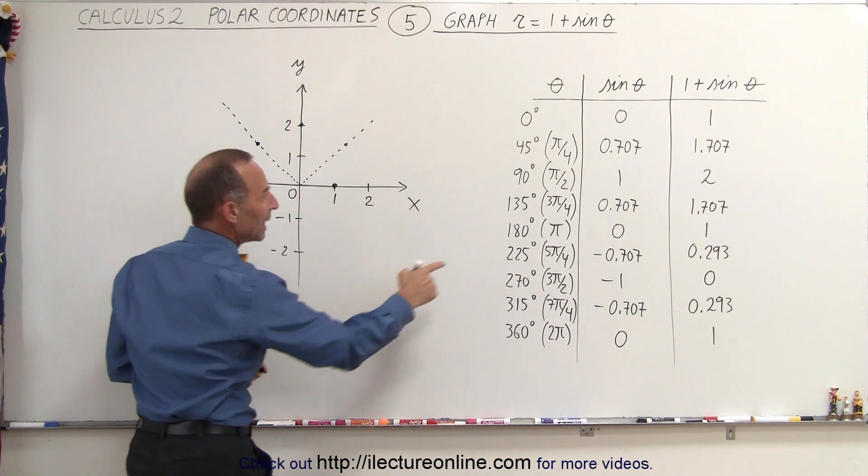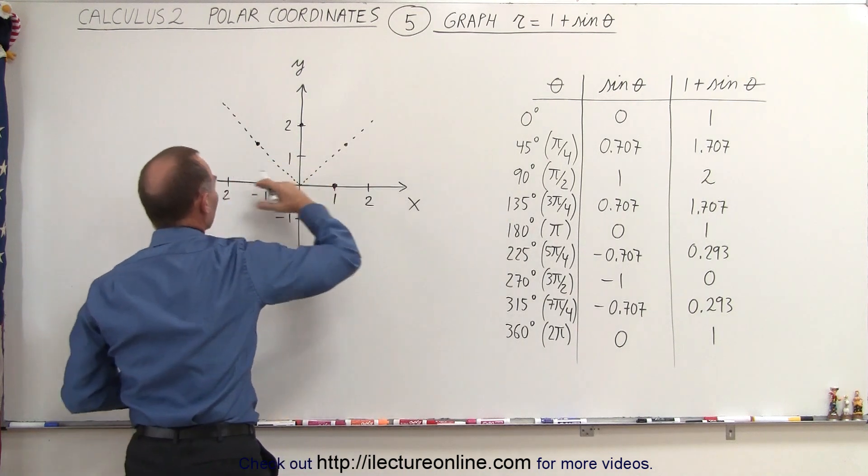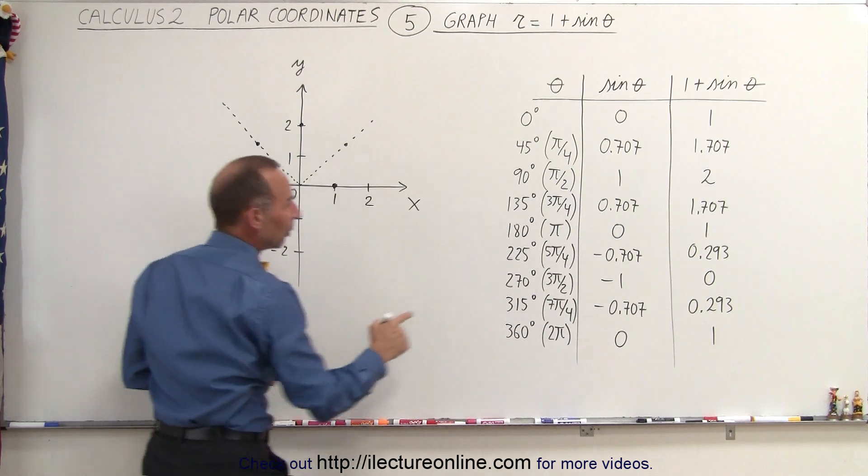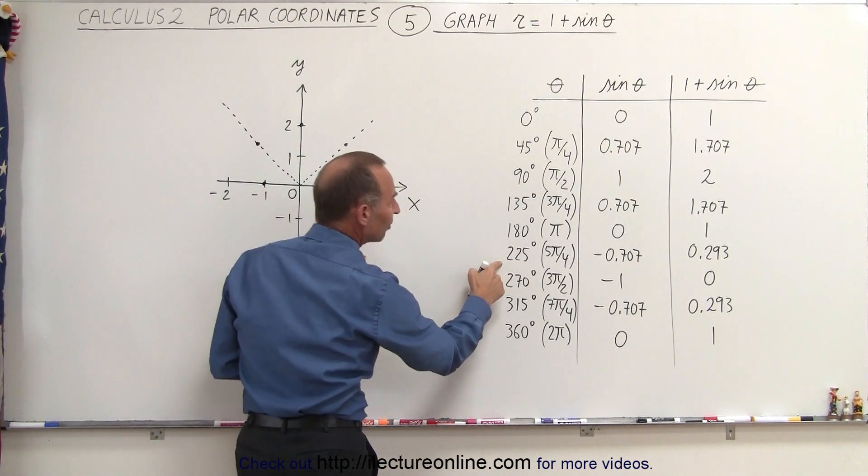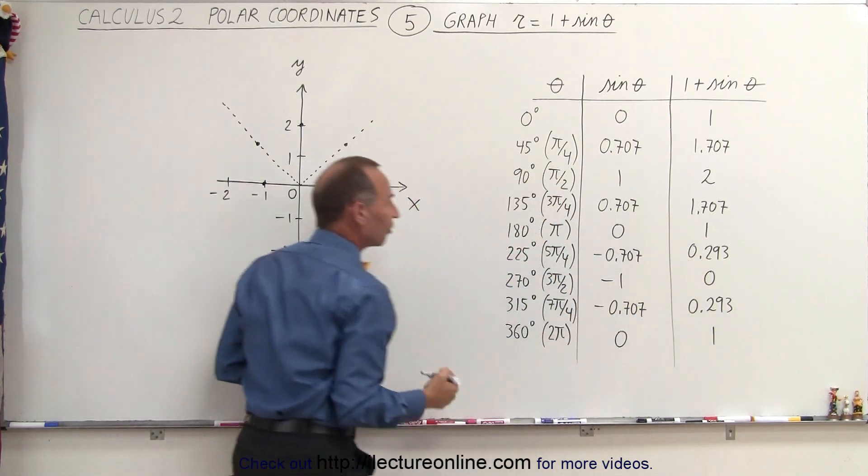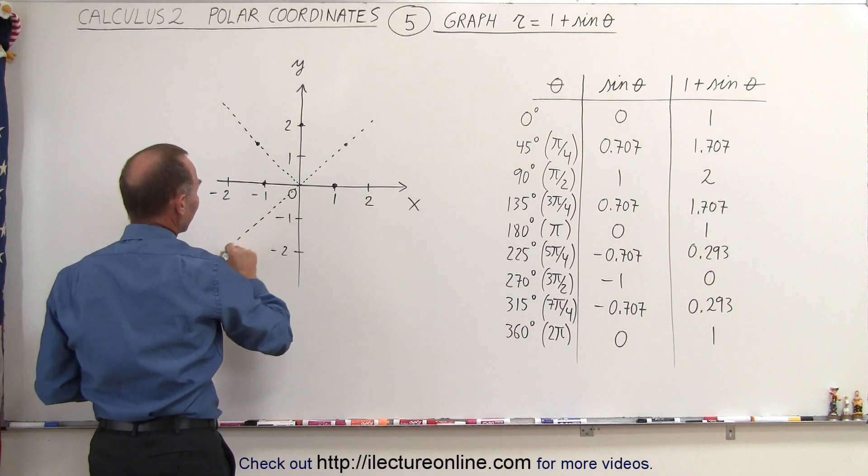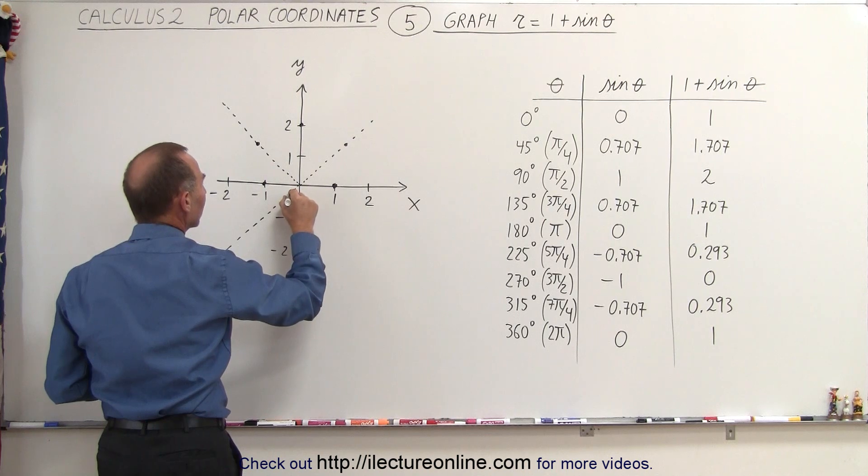At 180 degrees along the negative x-axis, the function equals 1. At 225 degrees, the function is just slightly over 0, about 0.3. The function is right here.